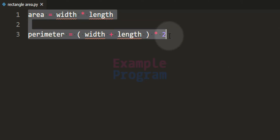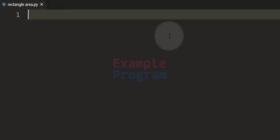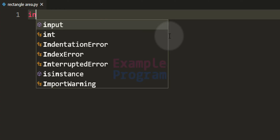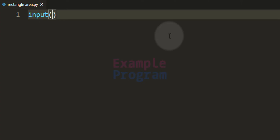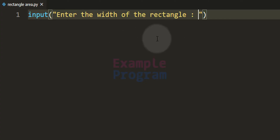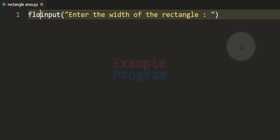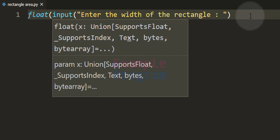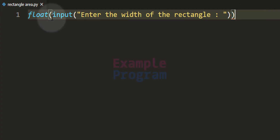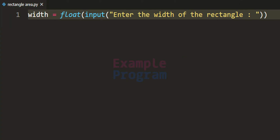In this program we will ask the user to enter length and width, and then find area and perimeter. We use the input function to ask the user to enter the width of the rectangle. The input function returns the value as a string, so we convert it to float using the float function, and store it in a variable called width.